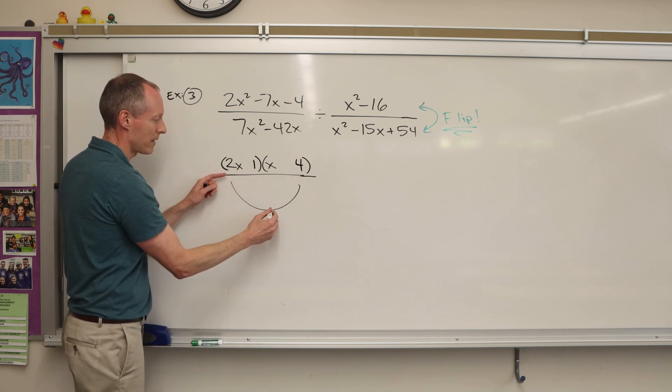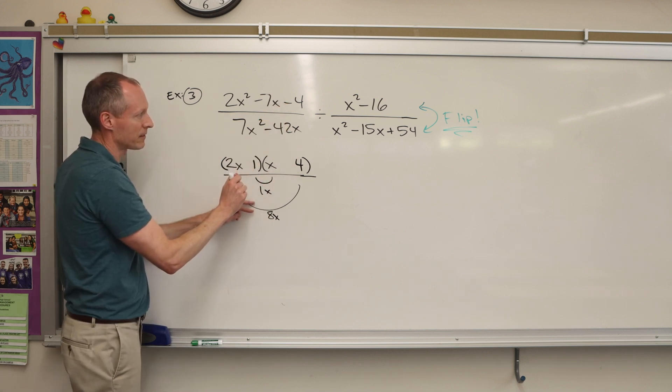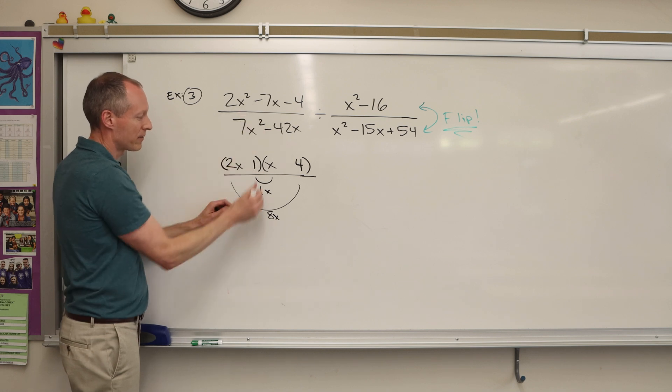And because that's negative, they have to be different signs. And I need a negative seven, so I'd want a negative eight and positive one, which would tell me that the negative sign goes there and the positive sign goes there.